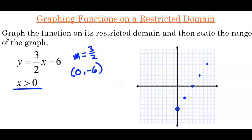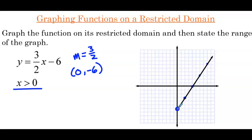Now we're going to connect the points on the line that we've drawn, but we're only going to include an arrow on one part of our line. Going from the y-intercept through the points we plotted — there is our line. Notice there's only an arrow on one side; no arrow on the other side because we don't want to go past 0 or include any value less than 0. Now identifying the range, we work from the bottom of the graph up. The lowest y value is negative 6, and the y values are all greater than negative 6, so the range is y is greater than negative 6.